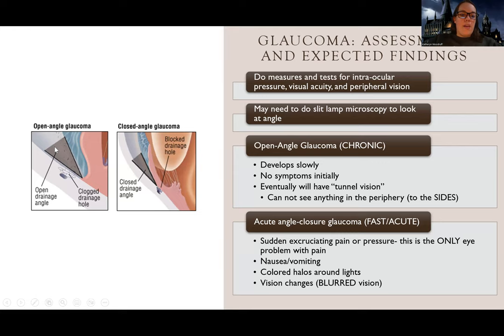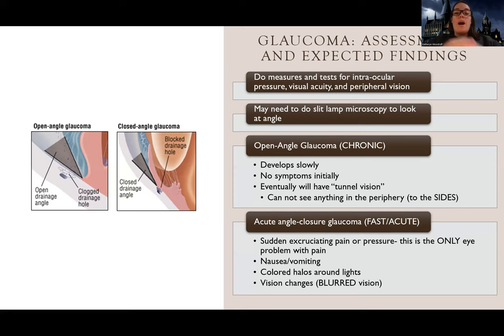This picture hopefully displays it — open angle, you can see the angle is open, there's an ability to drain, but there's just a clog starting to build up in the drainage hole. Whereas with closed angle, the angle is closed, it's completely blocked, the stopper's in there, we cannot get anything drained. You might see open angle listed as chronic open angle glaucoma, and the other one called angle closure or acute glaucoma — that's the one where it's closed, and that's an emergency. You can think of the C for chronic as clogged, for open angle.